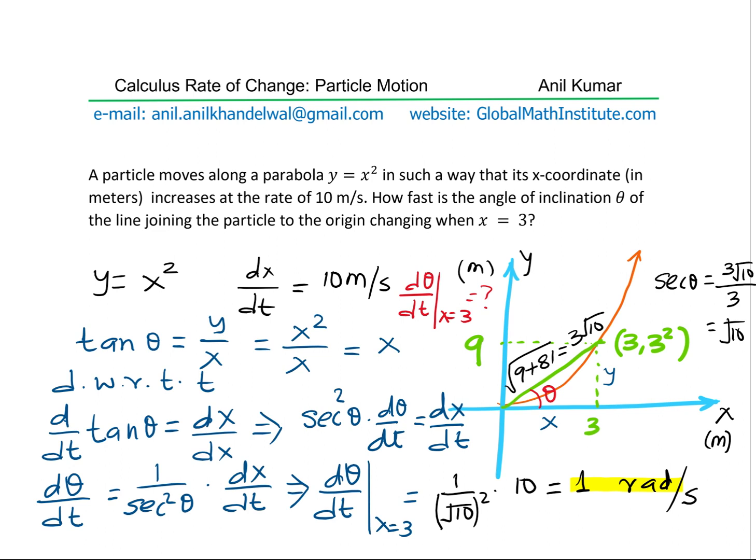So basically, we identified a point here at the instance when x is equal to 3. So at this instance, the horizontal x distance is 3, the y distance is 3 square, which is 9.